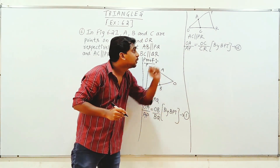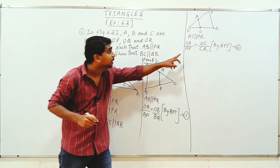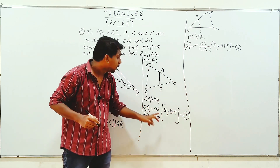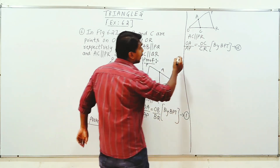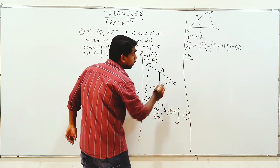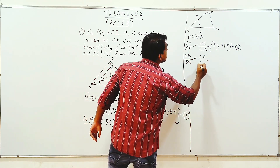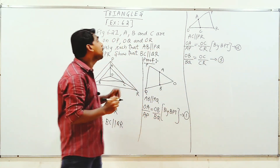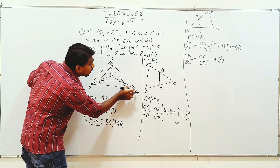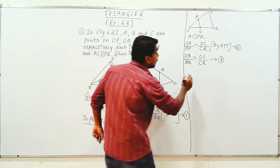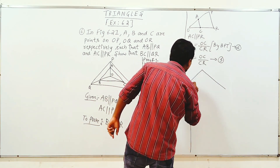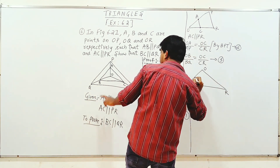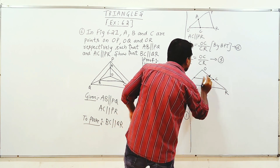This is Equation 2. From Equation 1 and Equation 2: OA divided by AP equals OB divided by BQ (Equation 1), and OA divided by AP equals OC divided by CR (Equation 2). So OB divided by BQ equals OC divided by CR — this is Equation 3.